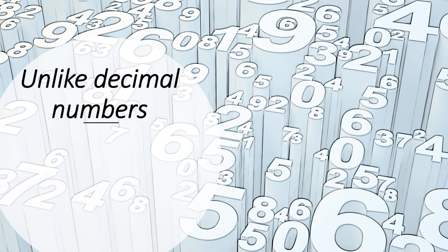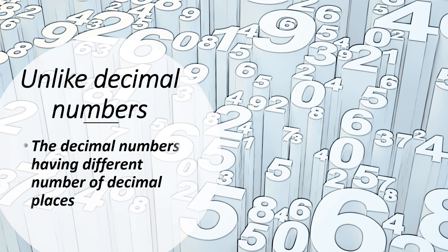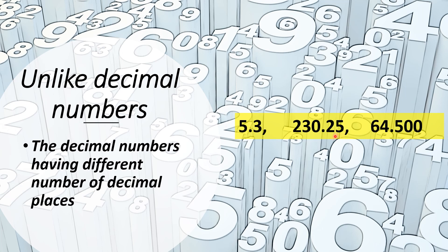What are unlike decimal numbers? Very simple — decimal numbers having a different number of decimal places. For example, 5.3 has only one decimal place; 230.25 has two decimal places; and 64.500 has three decimal places. So these are examples of unlike decimal numbers.